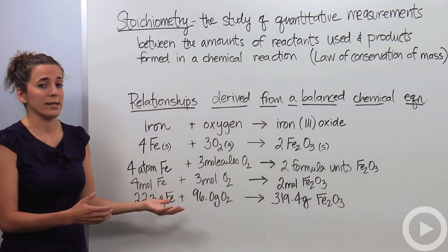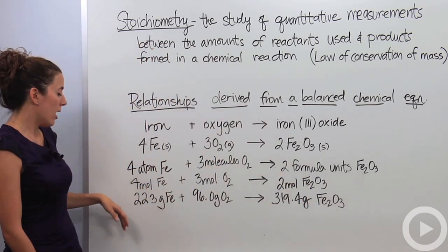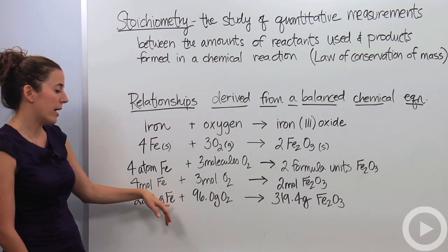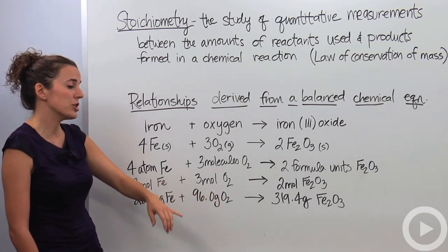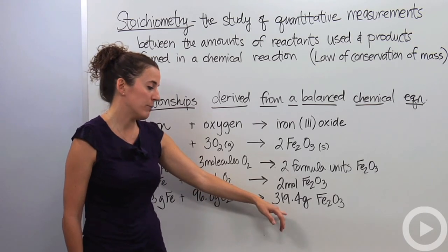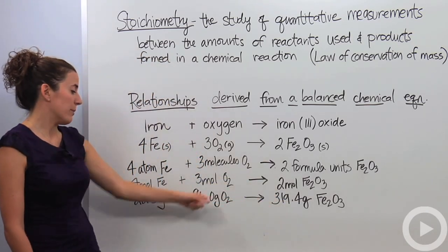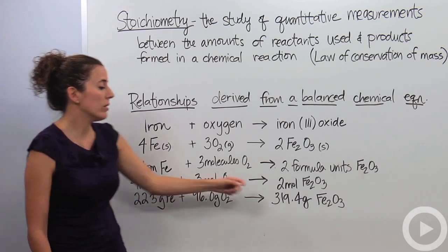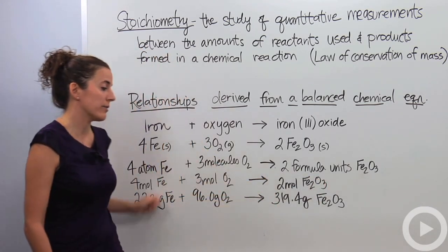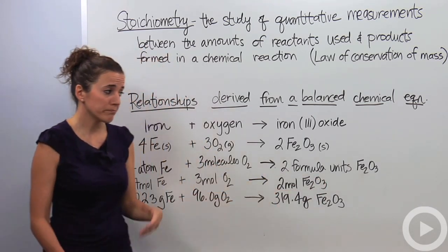If we were to get the molar masses of these using the periodic table, we can say we have 223 grams of iron reacting with 96 grams of oxygen, giving me 319.4 grams of iron(III) oxide. If you add these guys up on this side, the mass of the reactants will equal the mass of the products.